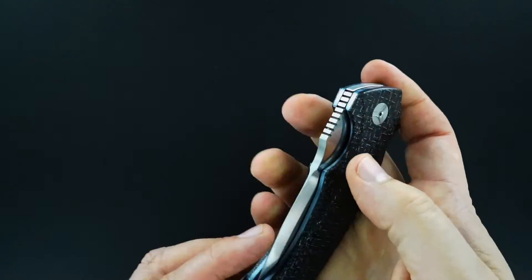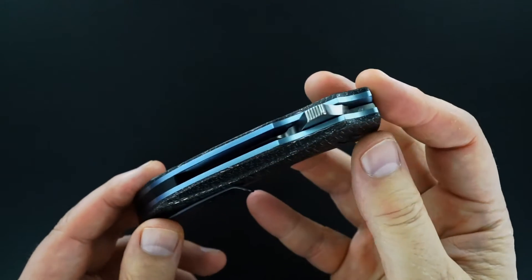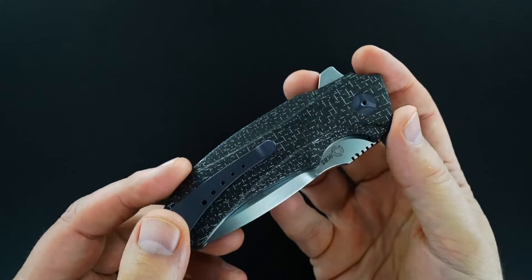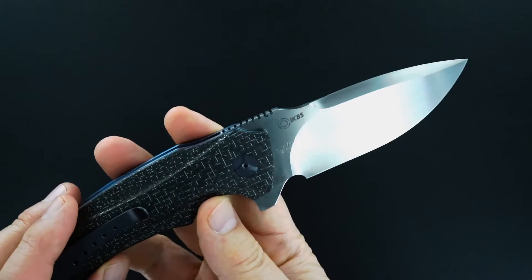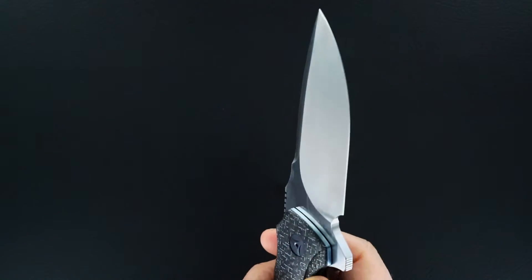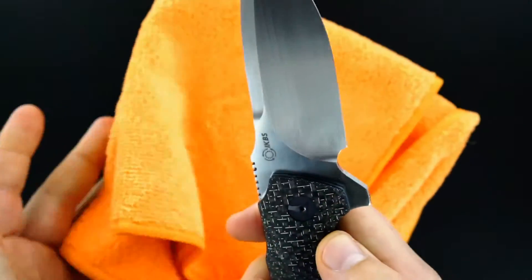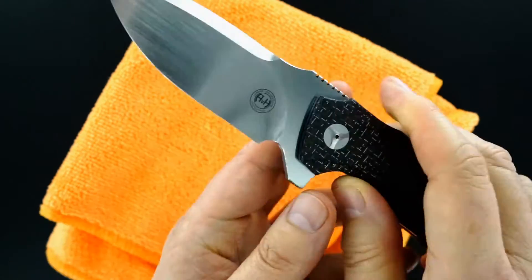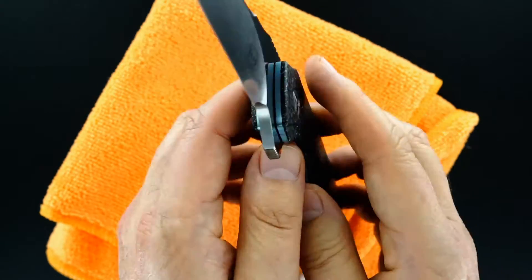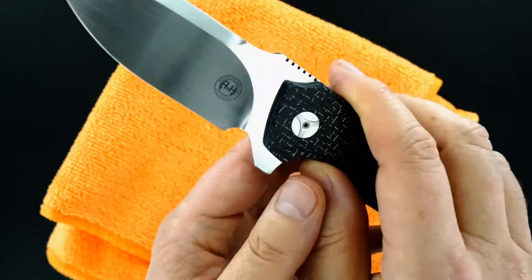Anodized blue liners, beautiful. I showed you the pocket clip. It's running on IKBS bearings so it flips perfect. There's a little bit of dust or grease. It's got dark pivot hardware on one side.